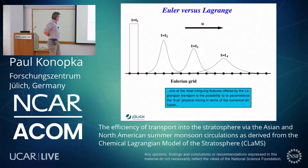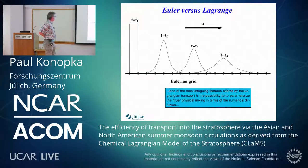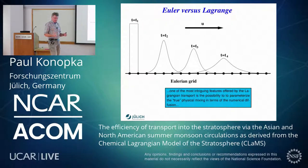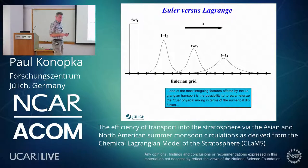What is the advantage of the Lagrangian thinking? One of the most intriguing features offered by Lagrangian transport is the possibility to parameterize the true physical mixing in terms of numerical diffusion. So instead of fighting against numerical diffusion, you can use it to parameterize the true physical mixing. This is what we implemented in CLAMS.